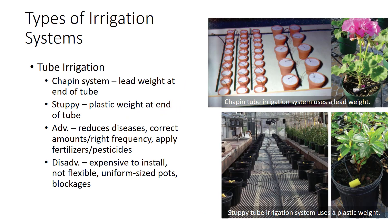Plants can be watered in many ways, so it is important to choose one that works best for the particular purpose of the greenhouse. Seven types of irrigation systems are commonly used in greenhouses. The oldest type is manually watering with a hose. Automated systems have been developed that differ in cost, efficiency, and flexibility. The tube irrigation system is the most commonly used method for watering potted plants. Two commonly used tube irrigation systems are the Chapin system and the Stuffy system. The only major difference between the two systems is the weight at the end of each tube.